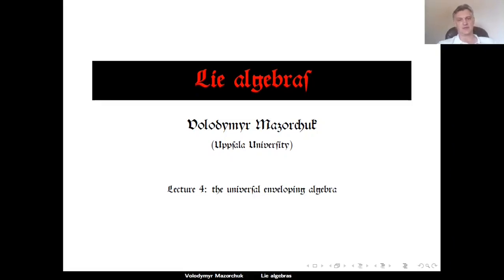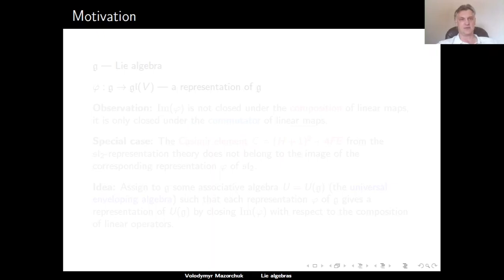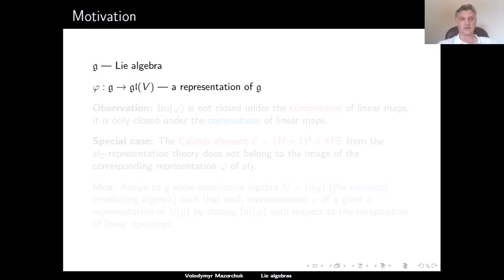Hello and welcome to Lie Algebras. In today's lecture, lecture number four, we will talk about the universal enveloping algebra. Let us start with some motivation. Consider a Lie algebra G. As we have seen before, a representation of this Lie algebra is a Lie algebra homomorphism from G to the Lie algebra of all linear operators on some vector space V.